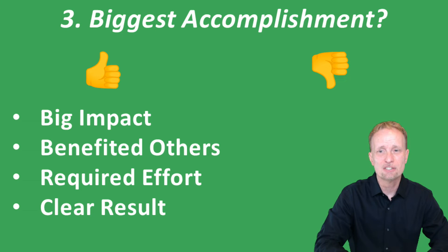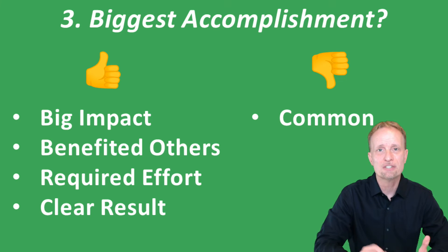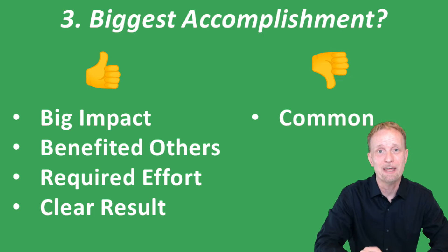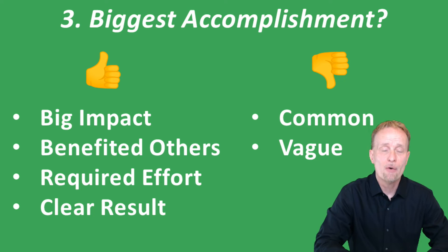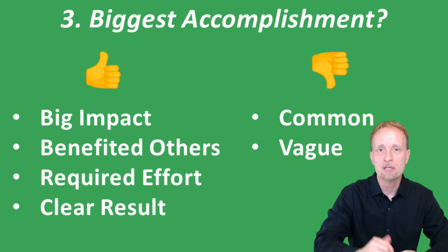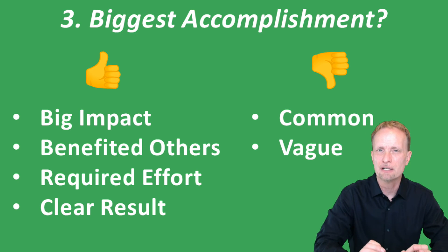Some things that don't make good answers: don't pick something that's common. If you say your biggest accomplishment was getting an A in math, well, most applicants got A's in math — pick something unique to you. Don't be vague; you want your result to be really clear. Don't say 'I made somebody happy' — say 'I took a student from a C to an A' or 'I increased the number of animals adopted by 40%' or 'I got first place in a science fair.' Something with a very clear, concrete result.